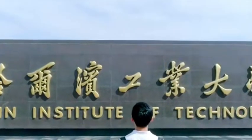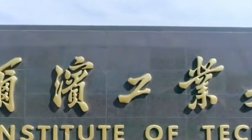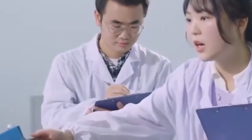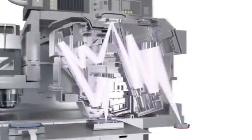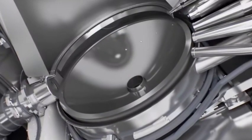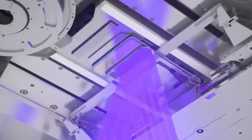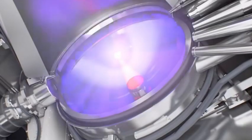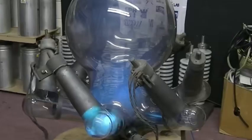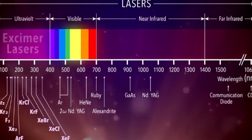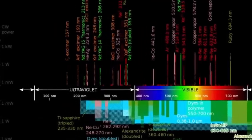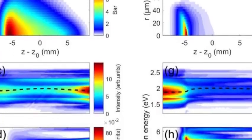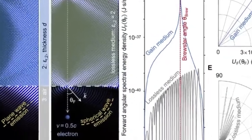Where does the extreme ultraviolet light source come from? You may be curious about how such a short light is produced. This is actually a very complicated process. Simply put, it is to use a special laser to irradiate some heavy metal droplets, such as tin droplets. These droplets will become something called plasma under the irradiation of the laser, and then the plasma will emit extreme ultraviolet light. This process is like people lighting fireworks with matches. Matches are lasers, fireworks are plasma, and the light emitted by fireworks is the extreme ultraviolet light that people want. Of course, the actual situation is much more complicated than this, and various conditions need to be precisely controlled to obtain stable, high-quality extreme ultraviolet light.